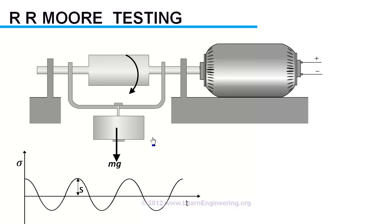Load on specimen is reduced gradually so that a condition is reached where specimen never breaks. Corresponding bending stress amplitude induced will be the endurance limit of material.